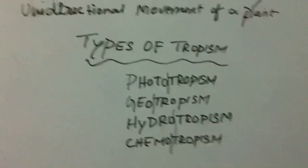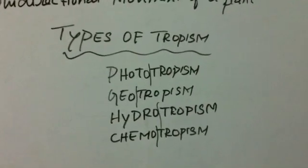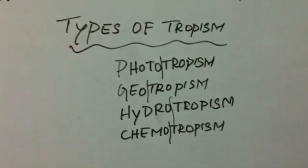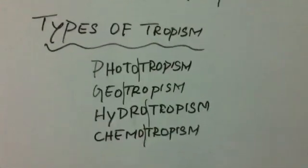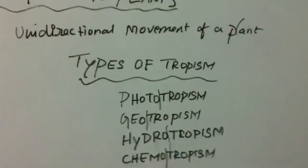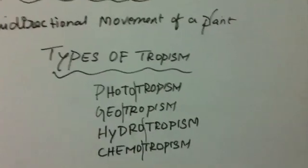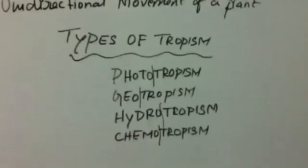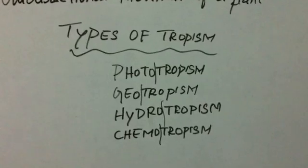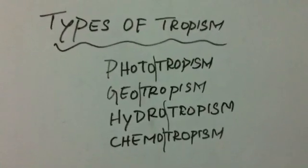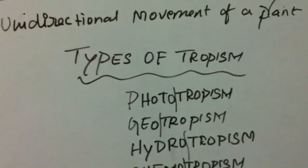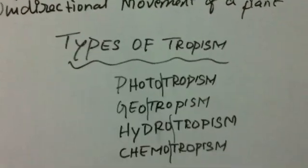So let us see the types of tropism. There are four types of tropism. The types of tropisms are: phototropism, geotropism, and hydrotropism. Phototropism is the movement of a plant part towards light — 'photo' means light.